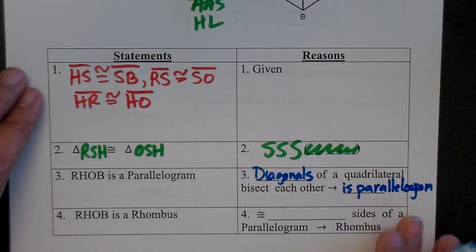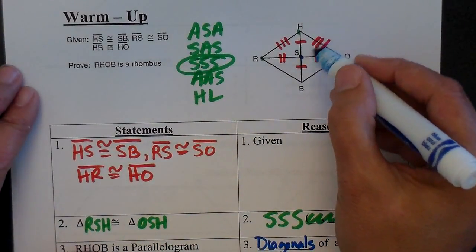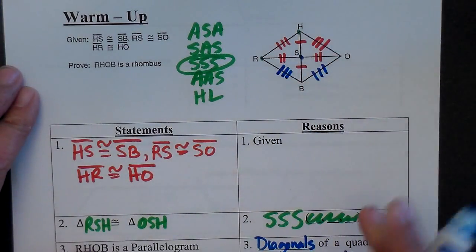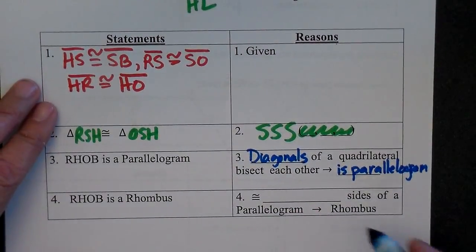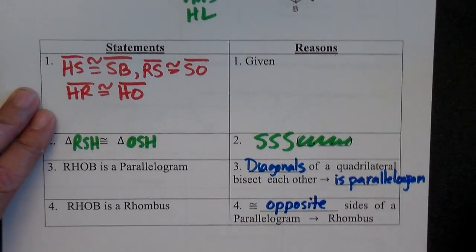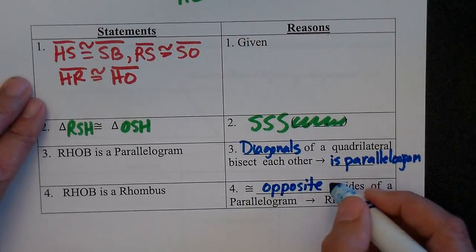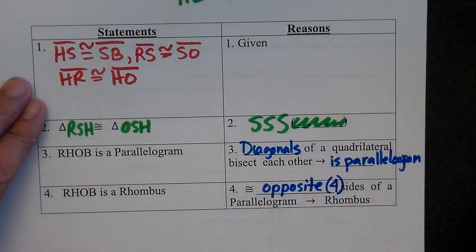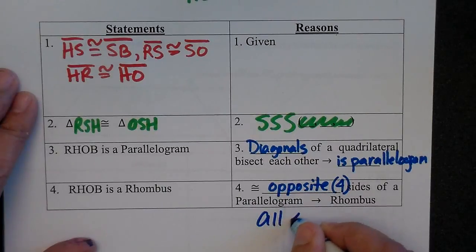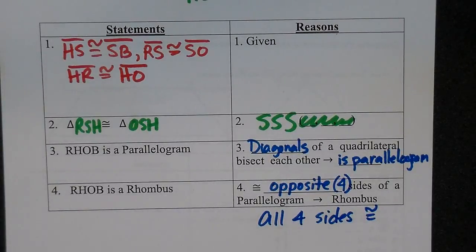Now that I know it's a parallelogram, how can I say it's a rhombus? Well, what do you know about a parallelogram? The opposite sides are congruent. So if that's three, that's got to be the same, and that's got to be the same. So I know since opposite sides of a parallelogram — and what you want to add in here is four, because there's four sides — all four sides are congruent. And that's how you can show that it is a rhombus.